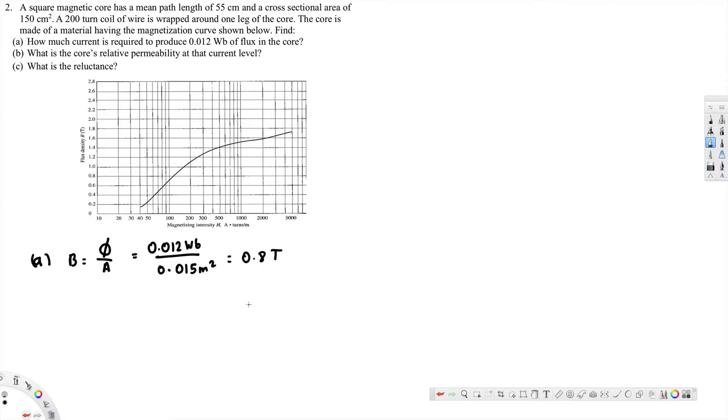And that's it for this one. Now the magnetizing intensity at 0.8 tesla: if you note this one, 0.8 tesla, at that moment when the magnetic flux density is 0.8, if you note this down right here, you will get 115. So H is 115 ampere turns per meter.